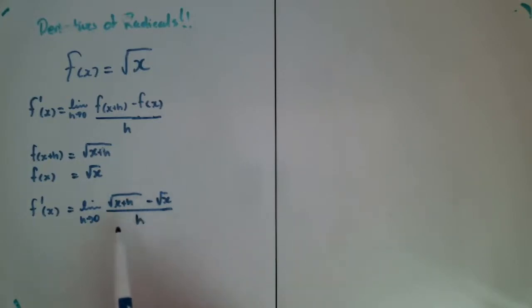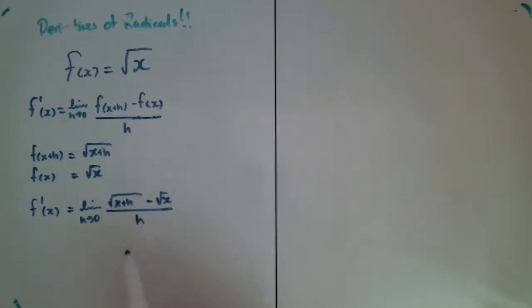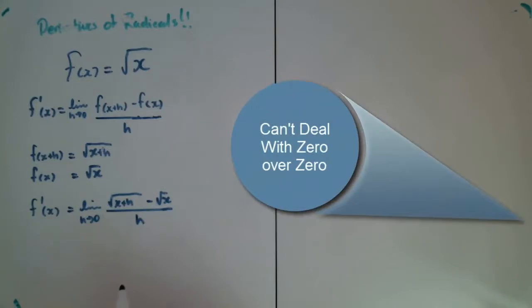Notice that I have one of these tricky expressions with radicals in it. Now if I put in my limit right now, then this is going to be the square root of x minus the square root of x all over zero. Sorry, square root of x minus square root of x, zero over zero. Can't have it.